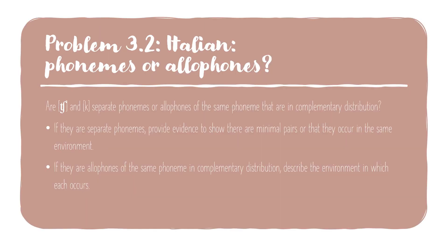Now let's do problem 3.2 from Italian. We are asked once again: are these phonemes or allophones? Phonemes are separate sounds; allophones are related sounds of the same phoneme. In this case, we have the K sound and the CH sound. Are they separate phonemes or allophones of the same phoneme in complementary distribution in Italian? Remember, each language has different rules. If they are separate phonemes, we provide evidence showing there are minimal pairs — that they occur in the same environment. If they're allophones in complementary distribution, we should be able to describe the environment in which each allophone occurs, because complementary distribution means we can predict which allophone will be used in which environment.